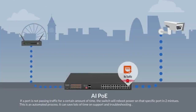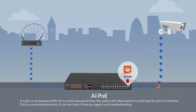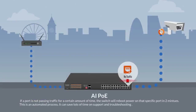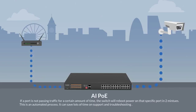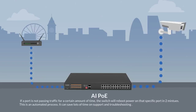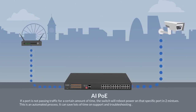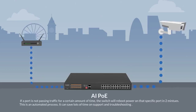AI PoE: if a port is not passing traffic for a certain amount of time, the switch will reboot power on that specific port within two minutes. This is an automated process that can save lots of time on supporting and troubleshooting.